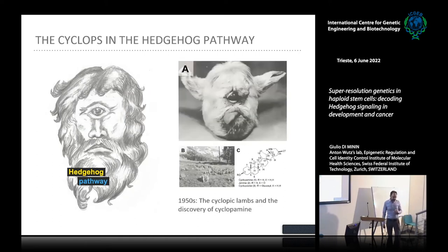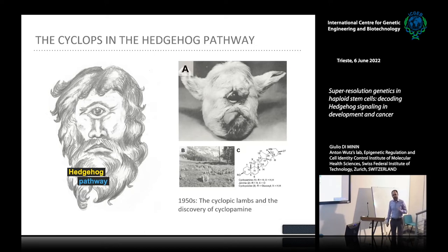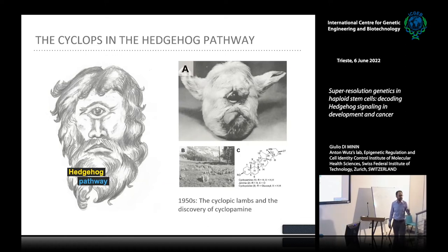In the 1950s, a group of researchers on a remote farm in Ohio had to deal with severe malformations in a lamb population. After extensive study, they understood these malformations were caused by a plant, California veratrum, eaten by pregnant sheep. This plant contains a teratogenic compound, and due to the type of malformation it caused — cyclopia — they called it cyclopamine. We had to wait an additional 30 years before the identification of the Hedgehog pathway and the discovery that cyclopamine is one of the most potent and specific inhibitors of the Hedgehog cascade.